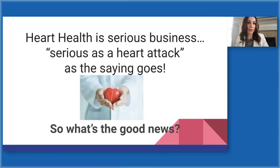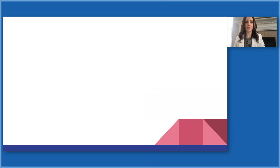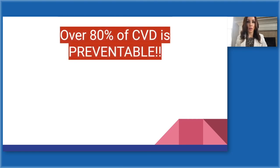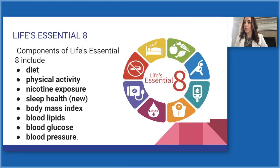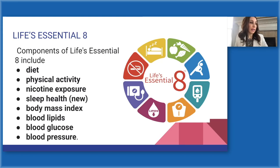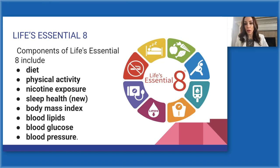So heart health is serious business — serious as a heart attack, as the saying goes. What's the good news? Well, over 80% of heart disease is preventable. In 2010, the American Heart Association came out with health metrics called Life Simple 7 — seven evidence-based areas to focus on to maintain optimal cardiac function. Clinical trials showed a positive correlation between achieving these lifestyle management guidelines and improvements in heart failure and heart disease.